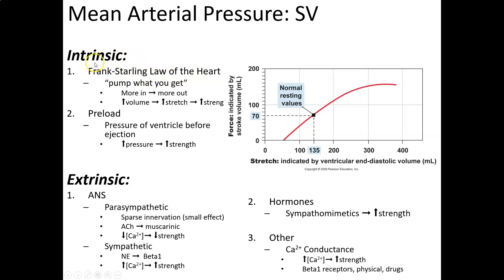Intrinsically, stroke volume is controlled first by the Frank-Starling law of the heart, named after Dr. Frank and Dr. Starling. Colloquially, it comes down to 'pump what you get' — the more blood the heart receives, the more it pumps out. If we increase the end-diastolic volume (EDV), that increases the stretch of the muscle fibers, causing greater overlap of cross-bridges, resulting in a higher contraction strength and more blood ejected.